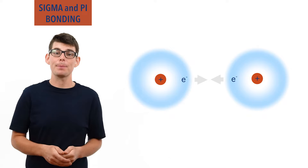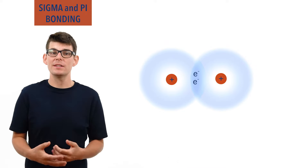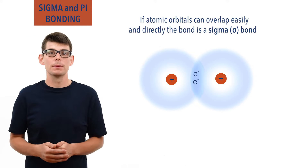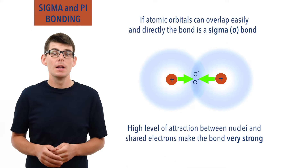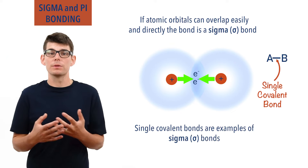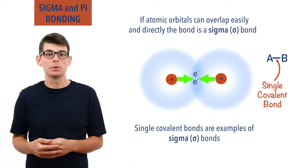To form a covalent bond between two atoms, atomic orbitals must overlap or merge to create a bonding orbital. The two atomic orbitals face each other, and if the orbitals can overlap easily, the bond formed is called a sigma bond, shown with the Greek symbol for sigma. The bonding orbital is close to the nuclei of both atoms, and the nuclei both have a high level of attraction to the electrons in the orbital, making the bond very strong. Single bonds are always examples of sigma bonds, as atoms will always try to arrange themselves to maximize the overlap of two orbitals.